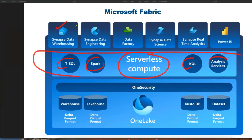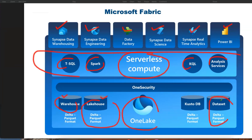The services span Synapse Data Warehousing, Synapse Data Engineering, Data Factory, Synapse Data Science, Synapse Real-Time Analytics, and Power BI. Backend data is stored in the data lake — possibly in Parquet format, Delta format (as used in Databricks lakehouse), or native formats like CSV. Overall, Microsoft Fabric is an end-to-end solution for lakehouse architecture.